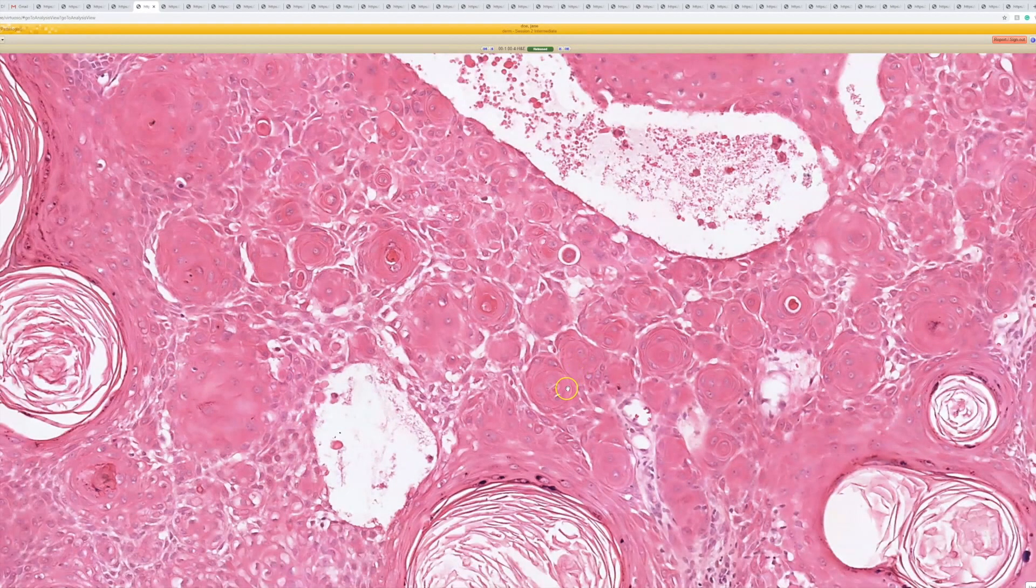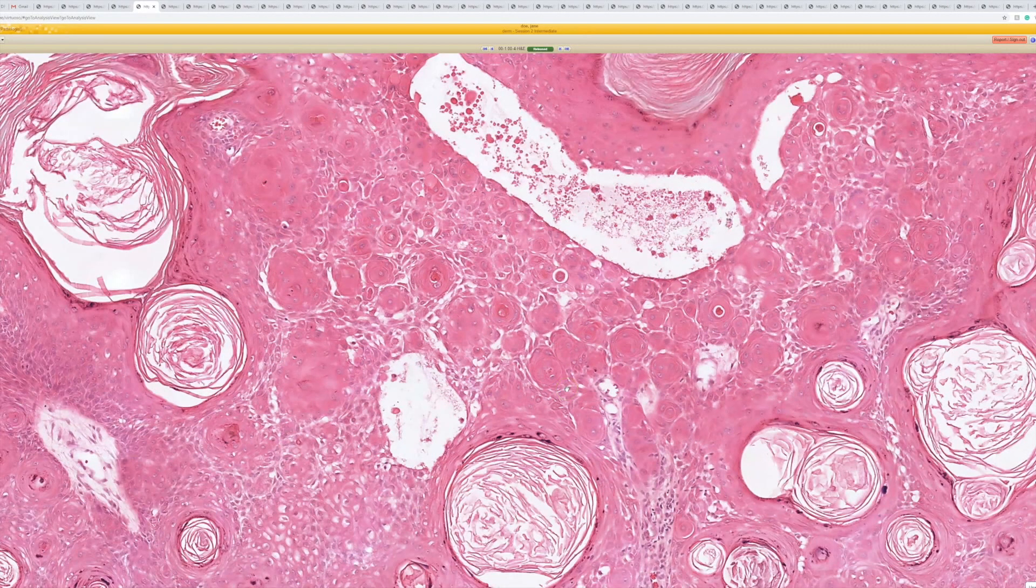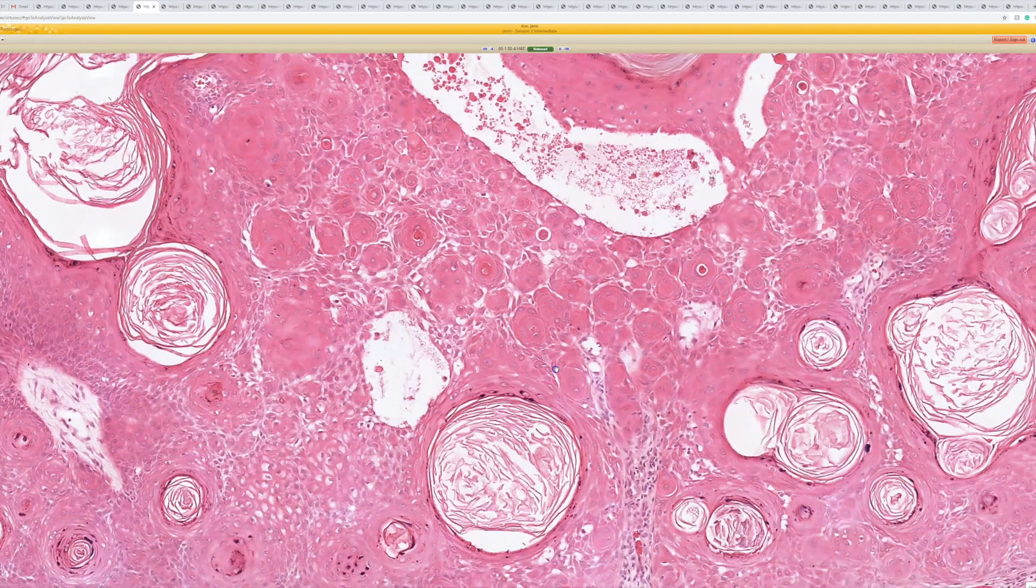And these have a lot of overlap with what other lesion that looks a lot like this? Inverted follicular keratosis. Yeah, IFK.